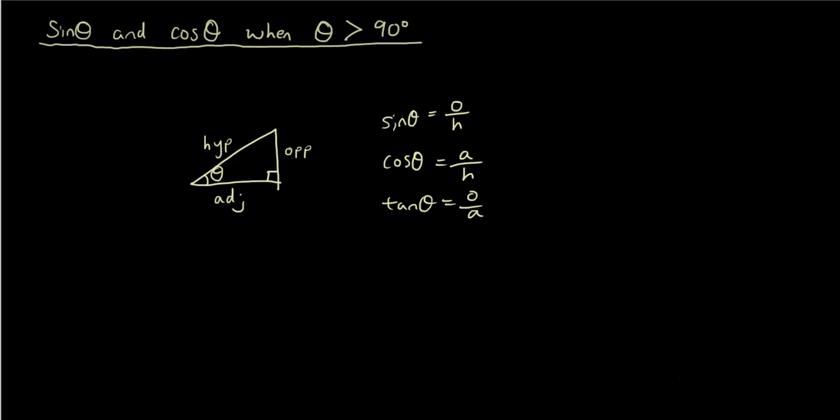And you probably remember that sine theta is the ratio of the opposite side to the hypotenuse side, opposite over hypotenuse in a right angle triangle. So therefore, theta in a normal right angle triangle is pretty much always between 0 and 90 degrees.